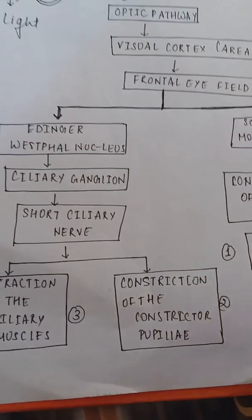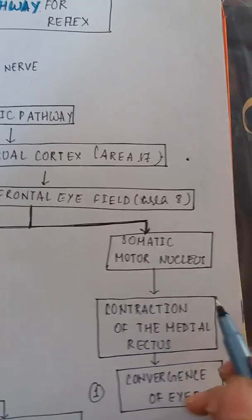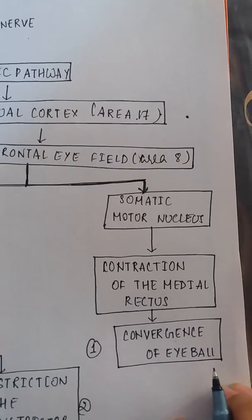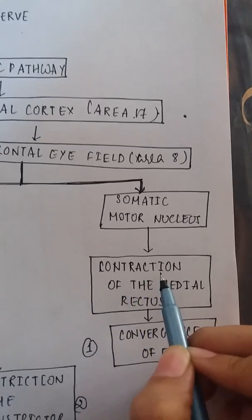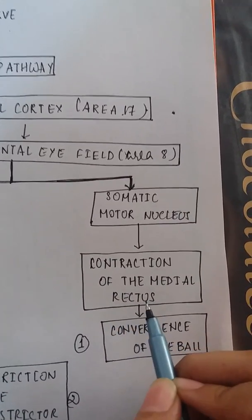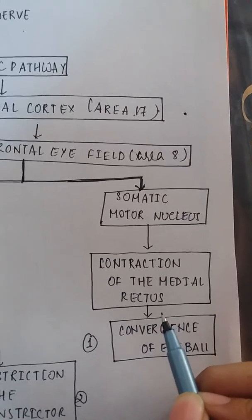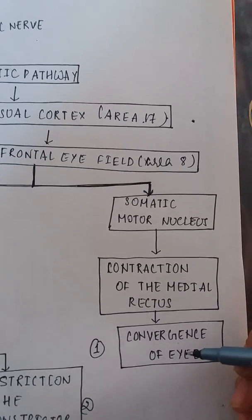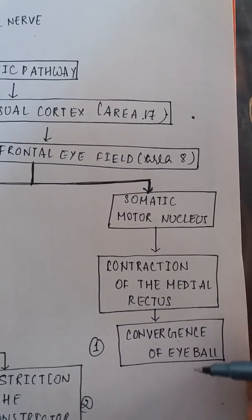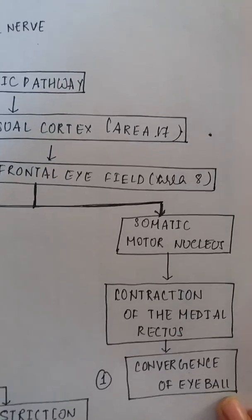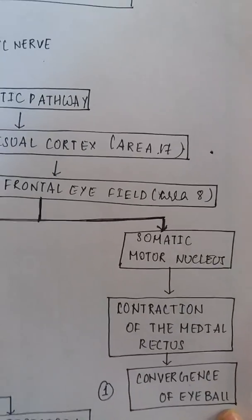The somatic motor nucleus drives contraction of the medial rectus muscle, which is responsible for convergence of the eyeball.